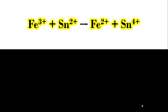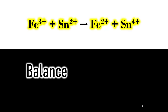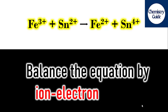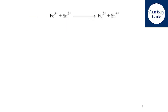Hello everyone, I am Umair and you are watching Chemistry Guides. In this video we will try to balance the above equation by the ion-electron method. The equation has Fe³⁺ plus Sn²⁺ on the left side of the arrow, while Fe²⁺ plus Sn⁴⁺ are on the right side.